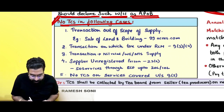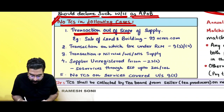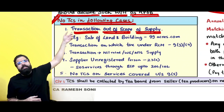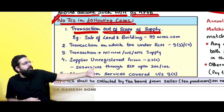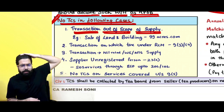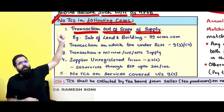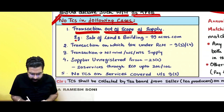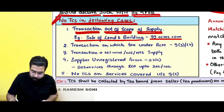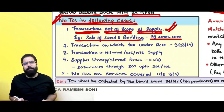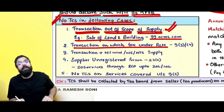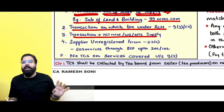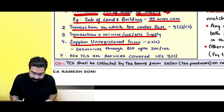Scenarios when TCS is not applicable: Number one — transaction is out of scope of supply. For example, if you are supplying land and building through an e-commerce operator like 99acres.com, a buyer sees your land and they direct him to you, and the payment goes through 99acres.com — 99acres.com will not deduct any TCS because sale of land is out of scope of supply. Number two — transaction on which tax is payable under reverse charge by the recipient. Number three — nil-rated, exempt, or non-taxable supply.